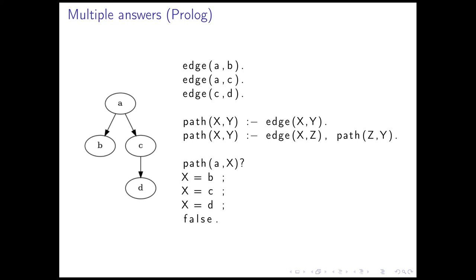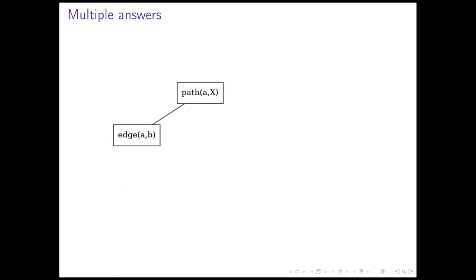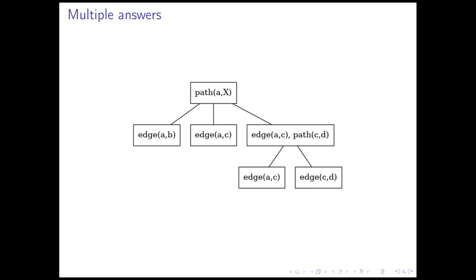The way this works is exactly the same — we take our goal and try to match it with the facts and rule heads. The first thing we can match is the fact edge AB. But instead of just stopping there, we continue matching and see that we can also match edge AC. Still, we're not done. We continue, and we can see that we match with the second rule and get the solution path AD. When we continue now, there are no solutions anymore, and that's why we got the false — it exhausted all the possibilities.